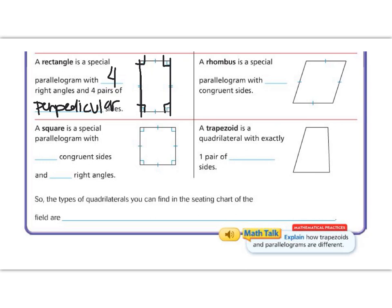Our next quadrilateral is a rhombus. A rhombus is a parallelogram because you can see it has two pairs of parallel sides that are congruent. But all four sides are congruent. It has four congruent sides.